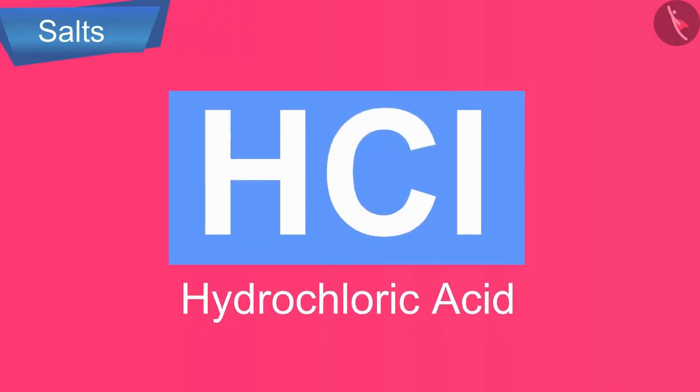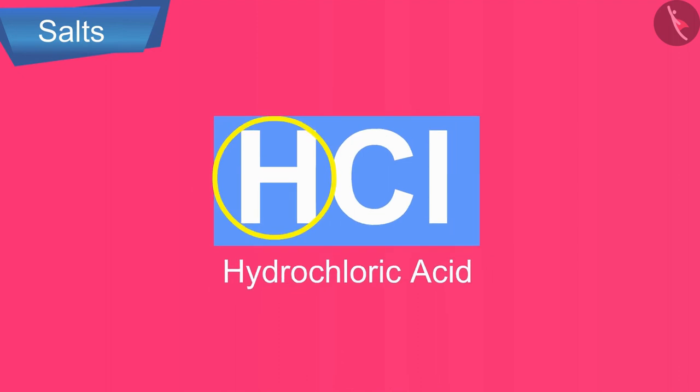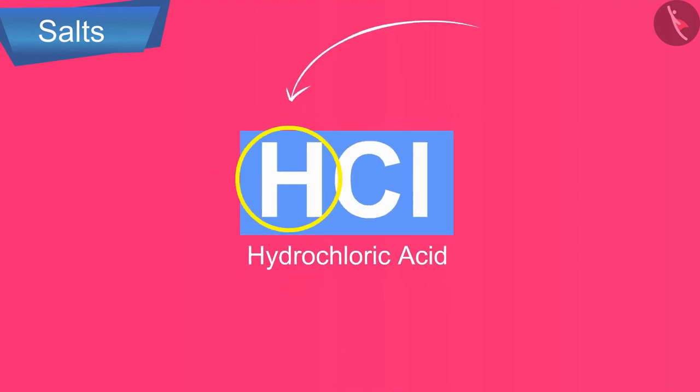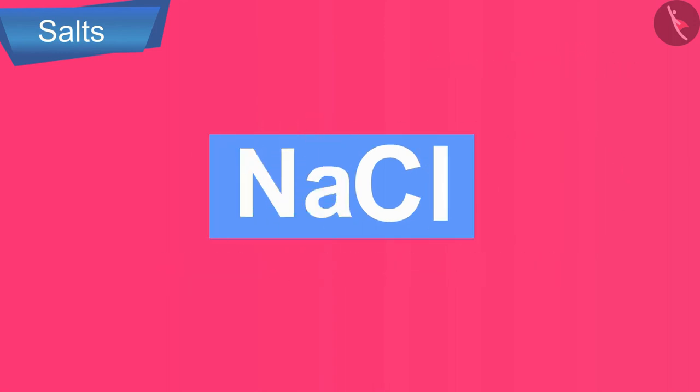Let us understand with the help of an example. Hydrochloric acid is HCl. Now if we replace the hydrogen of this acid by a metal atom, say sodium atom, then we will get a salt NaCl. This is called sodium chloride.